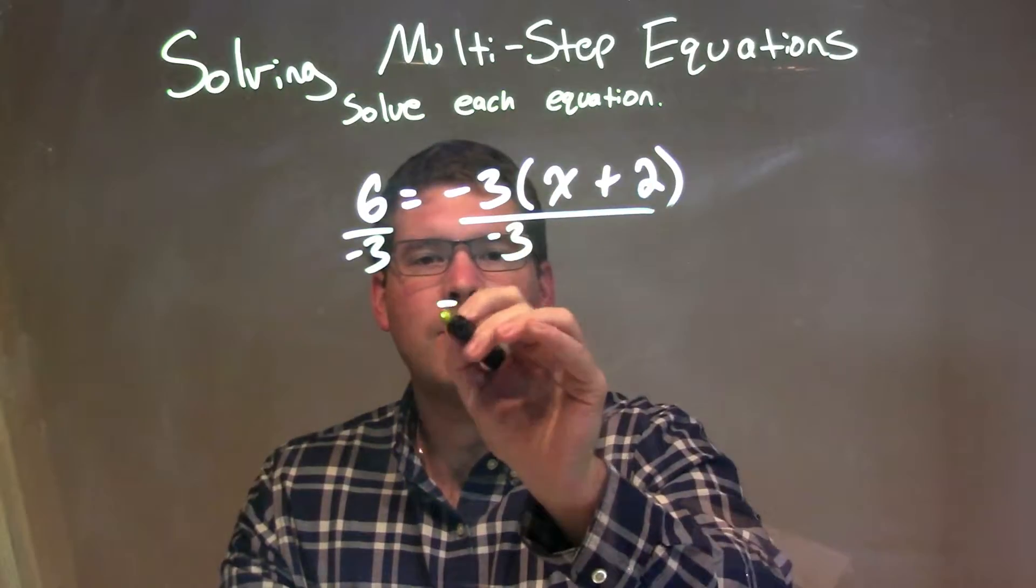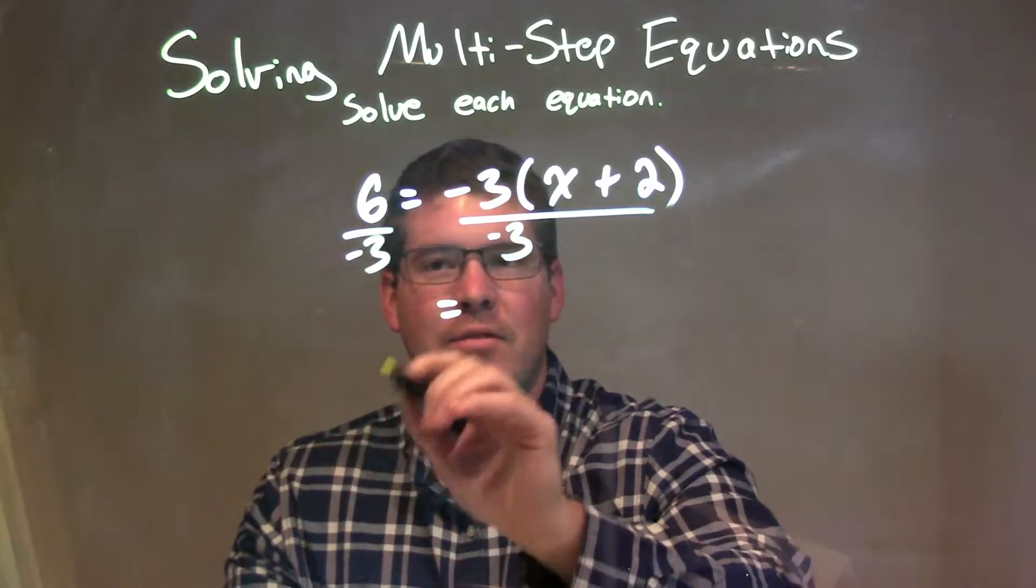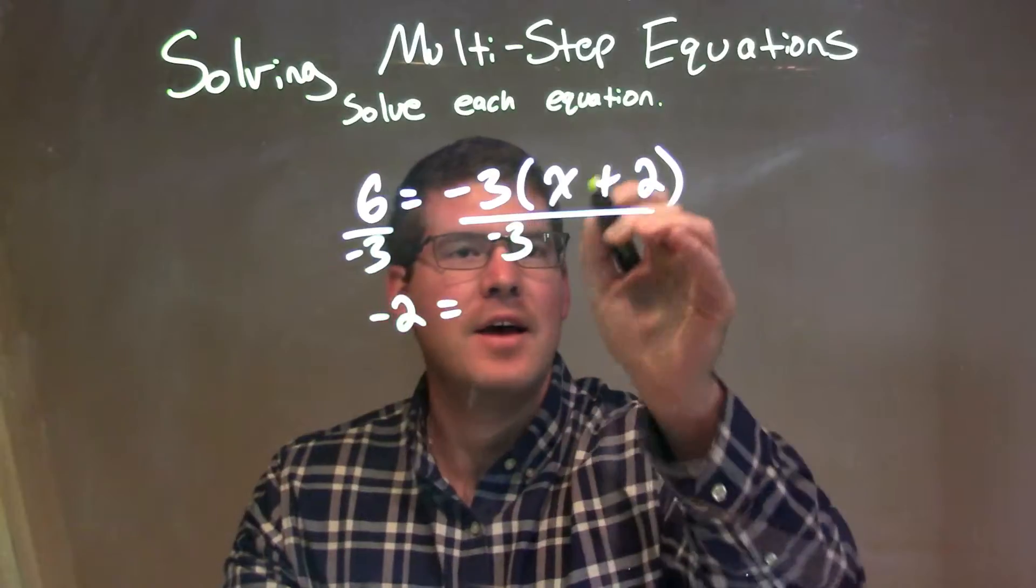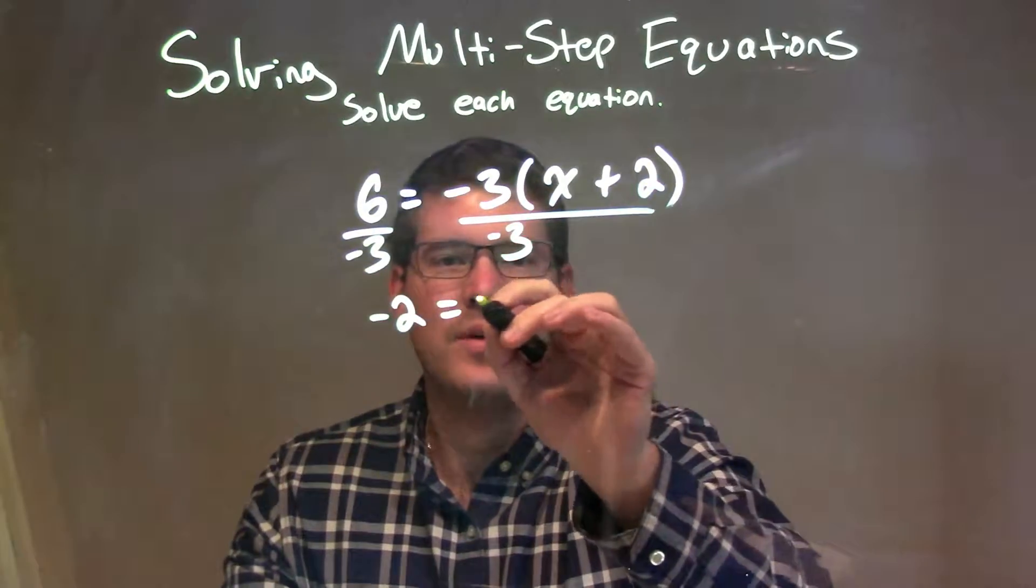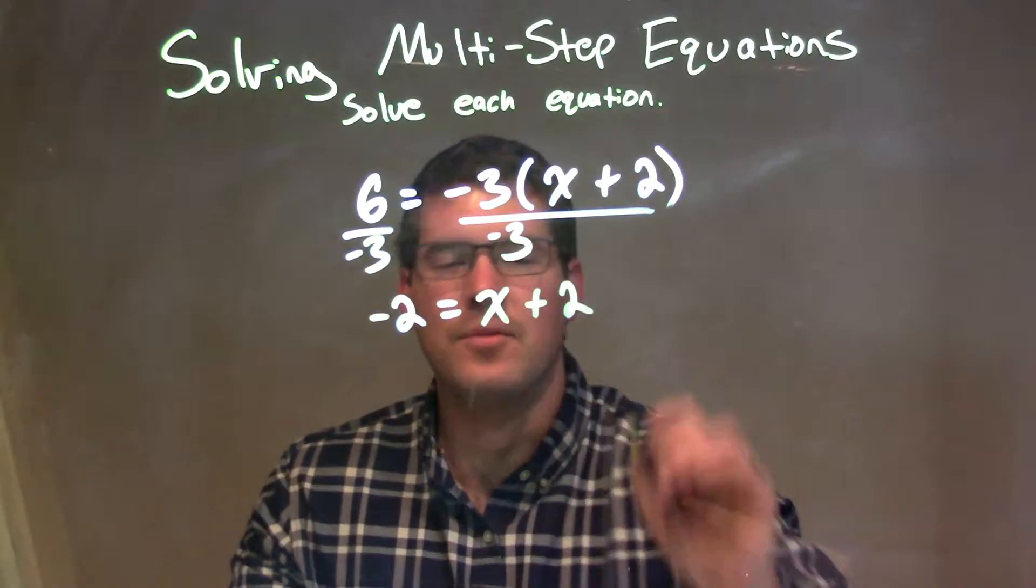Well, by doing that, I'm left with just 6 divided by negative 3, which is a negative 2 on the left. And then on the right, what's left in the parentheses? x plus 2.